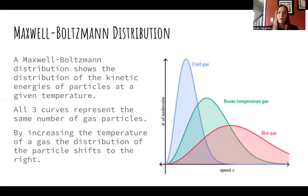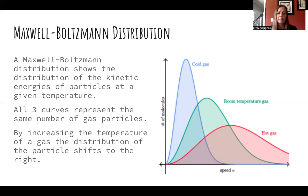A key point of the kinetic molecular theory is that kinetic energy is directly proportional to the temperature of the gas. As the temperature increases, the movement of the gas molecules also increases. We often see this represented in Maxwell-Boltzmann distributions, which show the distribution of the number of molecules with a particular speed — note this is speed, not kinetic energy.